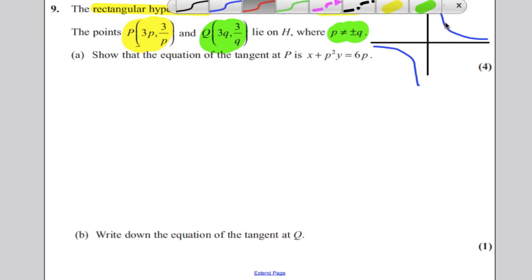And we're going to say that P, let's just say for argument's sake, P is here, and let's for argument's sake, say Q is here. And P is the point (3p, 3/p), and Q is the point (3q, 3/q).